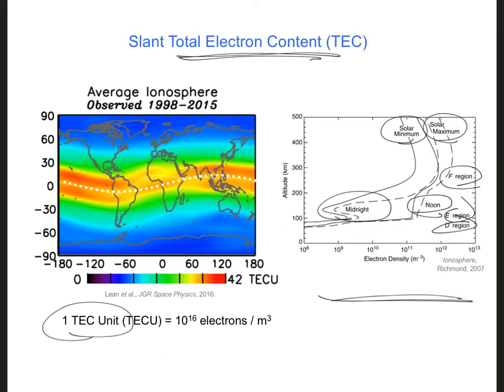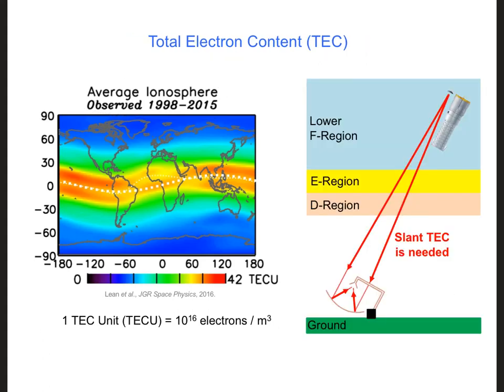On the left side of this slide right here is an example plot of the average total electron content observed in different parts of the world. Now as you can see on this slide, we want to make sure we use a total electron content for our exact propagation path, which is at an angle here, so it doesn't propagate straight downwards. They call this slant total electron content.